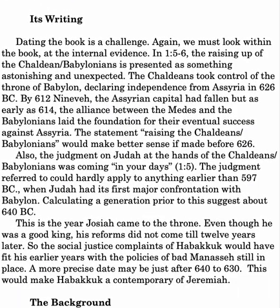Dating this book is a challenge. Again, we must look within the book at the internal evidence. In 1:5-6, the raising up of the Chaldeans — some translations say Babylonians — is presented as something astonishing and unexpected. The Chaldeans took control of the throne of Babylon, declaring independence from Assyria in 626 BC. By 612, Nineveh, the Assyrian capital, had fallen, but as early as 614 the alliance between the Medes and the Babylonians laid the foundation for their eventual success against Assyria. The statement about raising the Chaldeans or Babylonians would make better sense if made before 626.